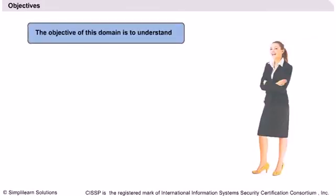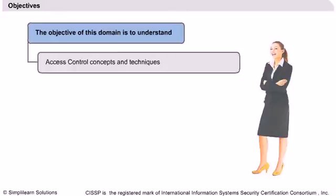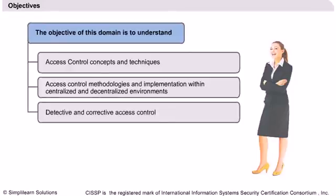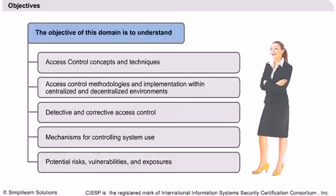The objectives of ISC2 for this domain are that the CISSP candidate should fully understand access control concepts, methodologies, and implementation within centralized and decentralized environments across the enterprise's computer systems. Access control techniques, detective and corrective measures should be studied to understand the potential risks, vulnerabilities, and exposures.